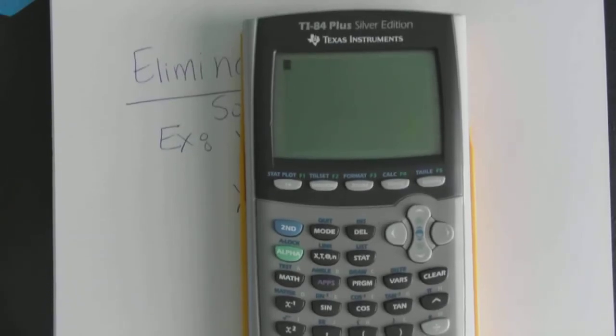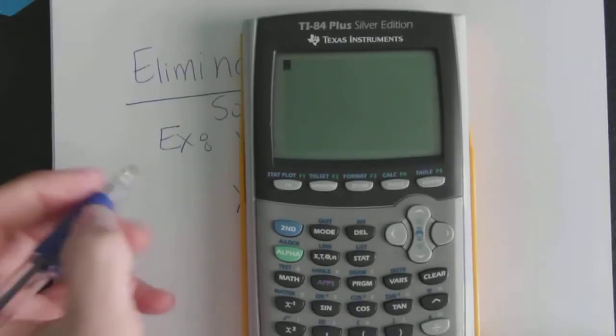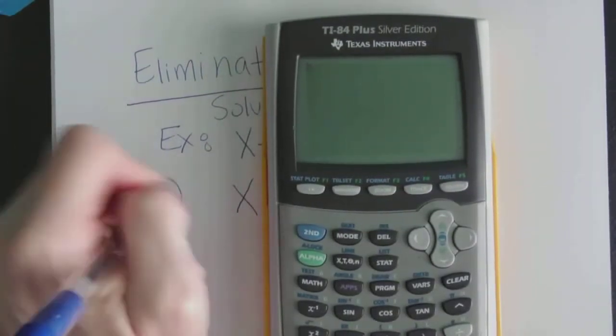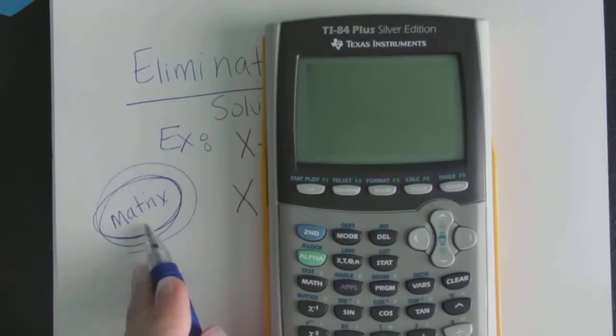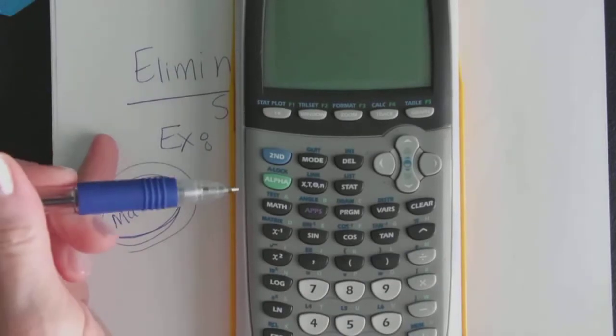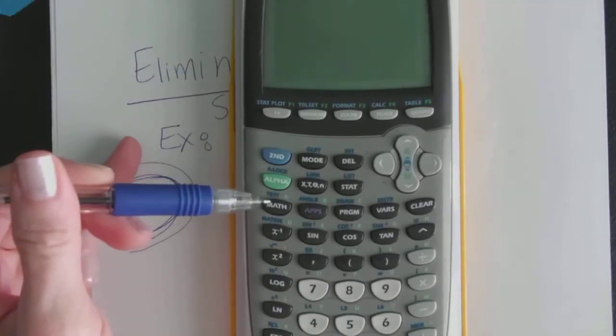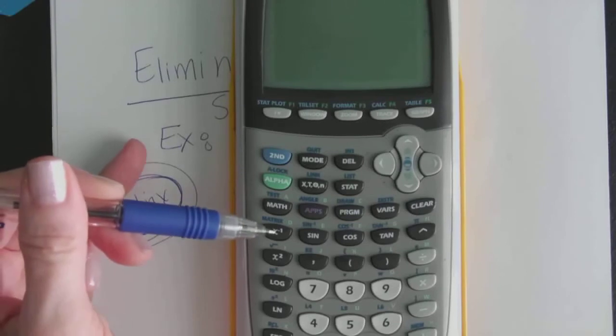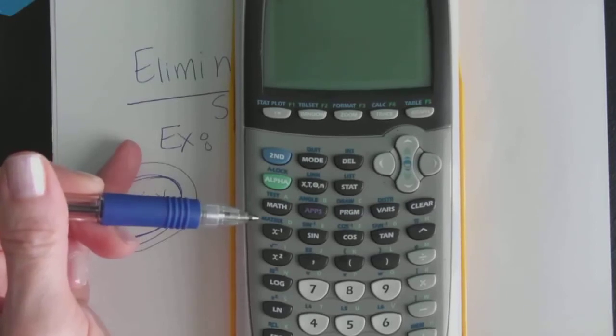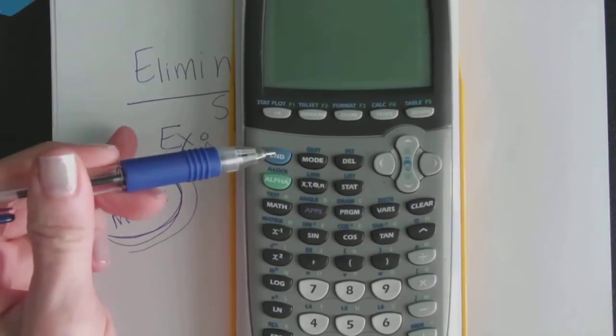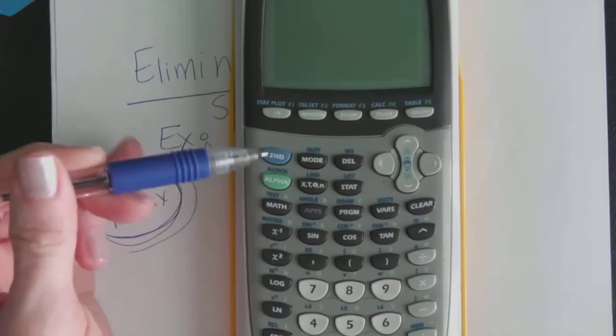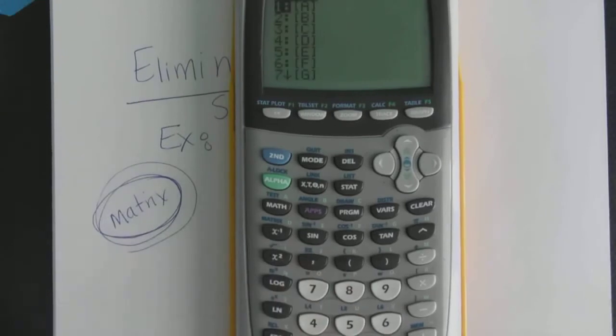Okay, in order to do elimination on the calculator you have to reference what's called a matrix. So everything about this is about this word matrix and you can actually see that word right here in blue. It's underneath the math key and above the x to the negative first power key. So to access the matrix we have to press the blue second key and then this x to the negative 1 key. So let's hit second matrix.